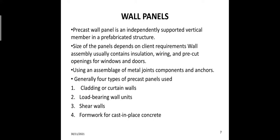Generally four types of precast panels are used: cladding or curtain wall, load-bearing wall units, shear walls, and framework cast-in-place concrete.